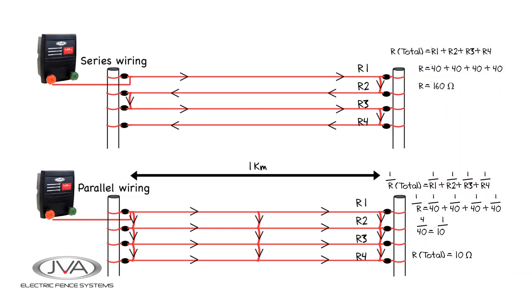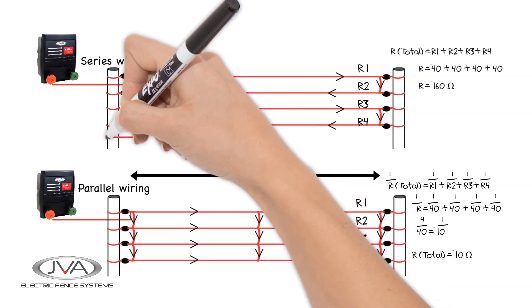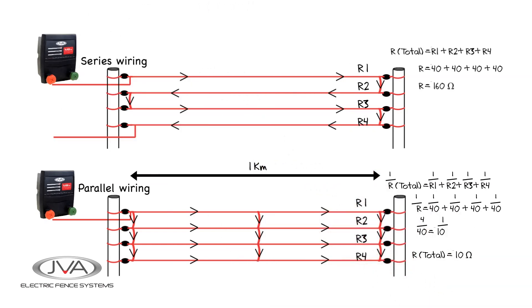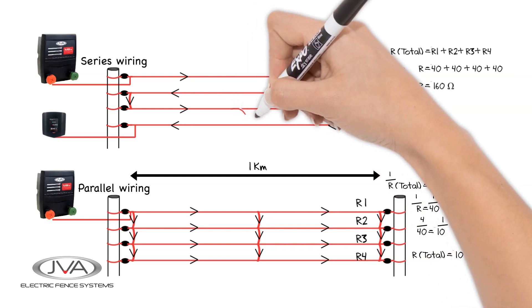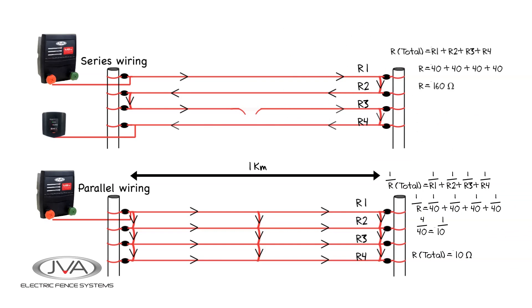So we can clearly see by the equation that a series wired fence will have a much higher resistance, and we cannot wire a long distance with it. It is perfect though for security fences, where we are fencing smaller properties but require better sensitivity from the fence. When one wire is cut, the circuit is broken and we get a notification on the monitor.